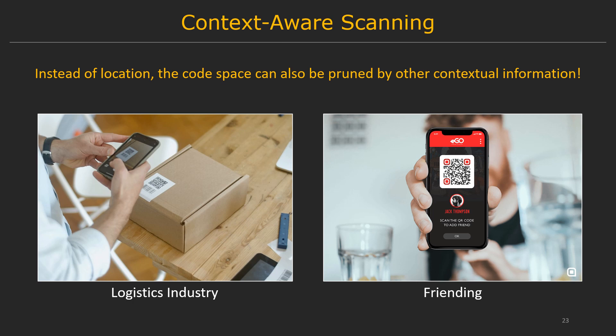In addition to location-based pruning, the same idea can also be applied when the code space can be pruned using other context information. In the logistics industry, the code space may be pruned down to the packages you expect to receive today in your local region. For a social media app, the code space may be pruned down to users who are actively waiting for friend requests. We think the proposed technique can be adapted to a wide range of code scanning applications, even beyond codes with fixed locations.